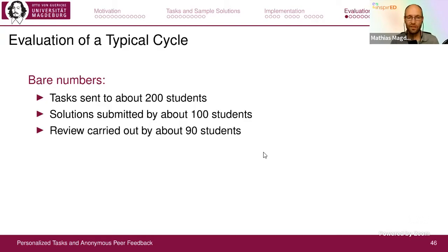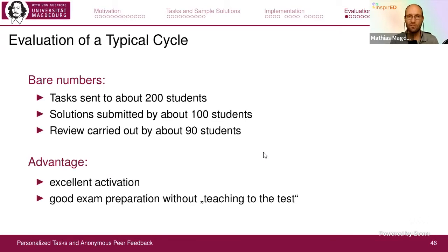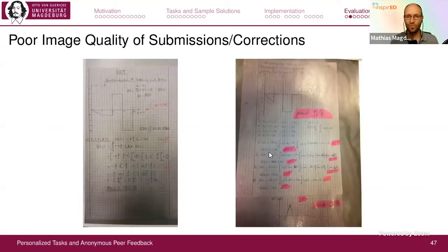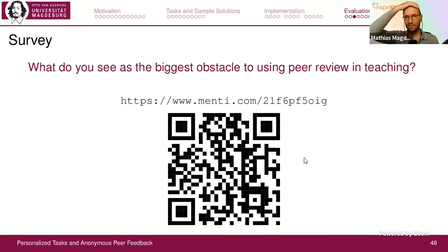A typical cycle — and we do six of these per semester — is that I send the tasks to about 200 students in our course, then maybe about 100 of them respond and submit a solution. You lose some students who don't do the peer review, but then they also don't get many points for their own solution. I would say this is a very good activation of the students and a very good preparation for the final exam without teaching to the test. One problem we still have is that sometimes the image quality of the scanned or photographed solutions is not too good.